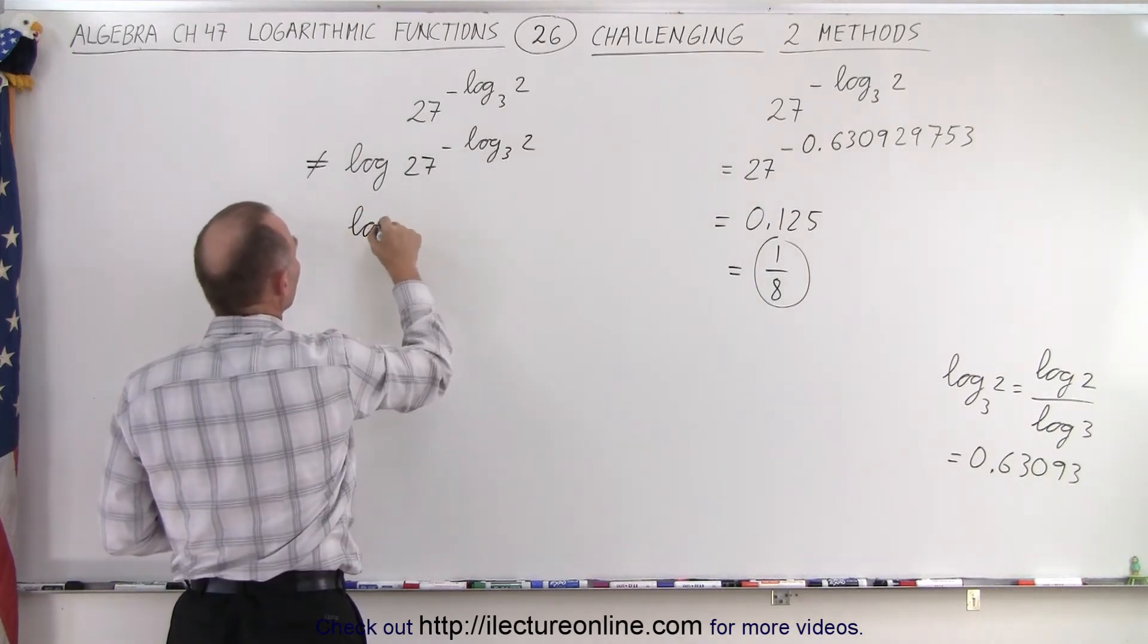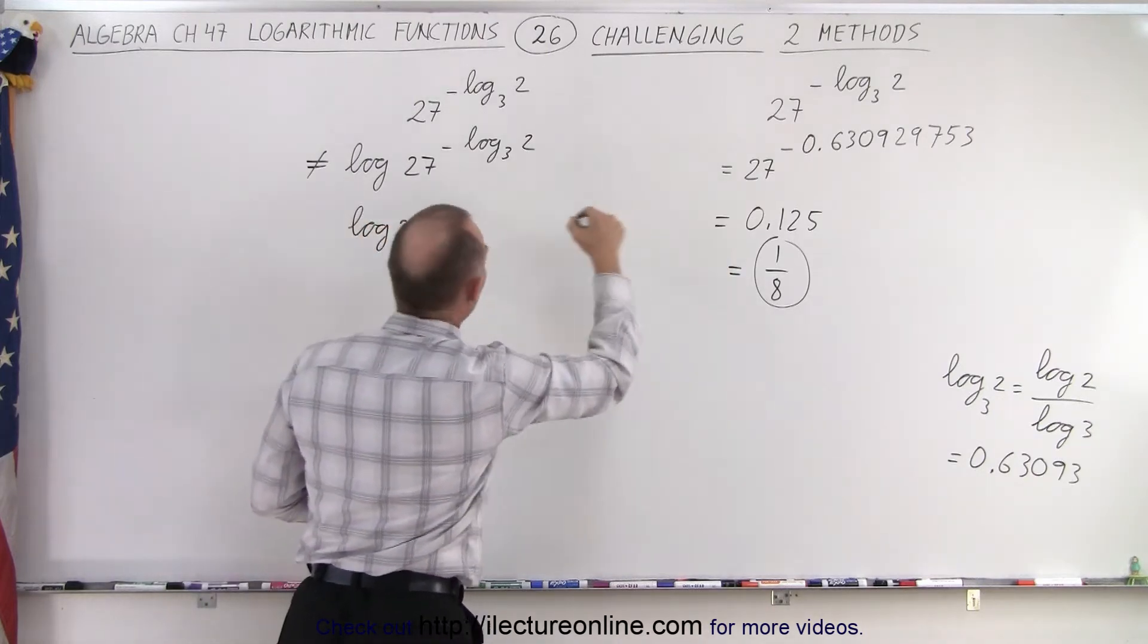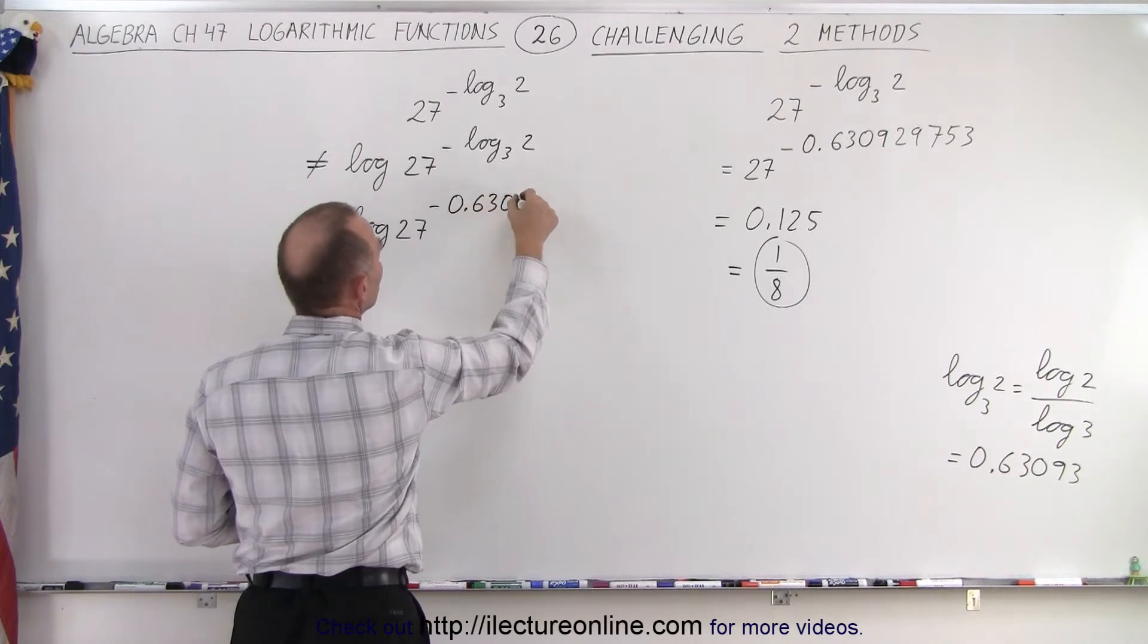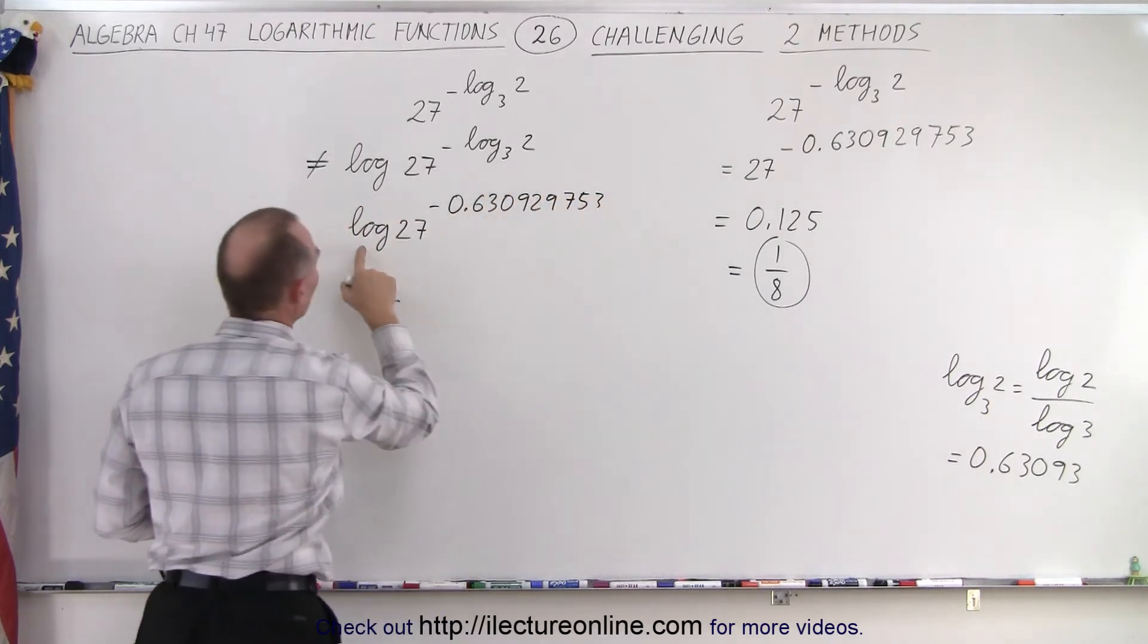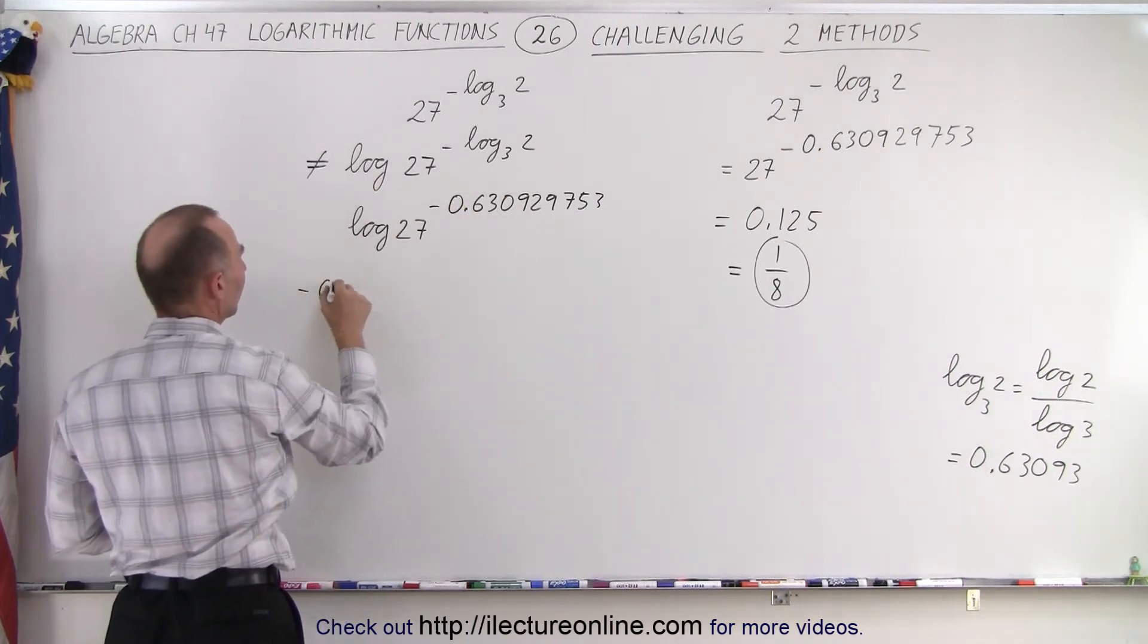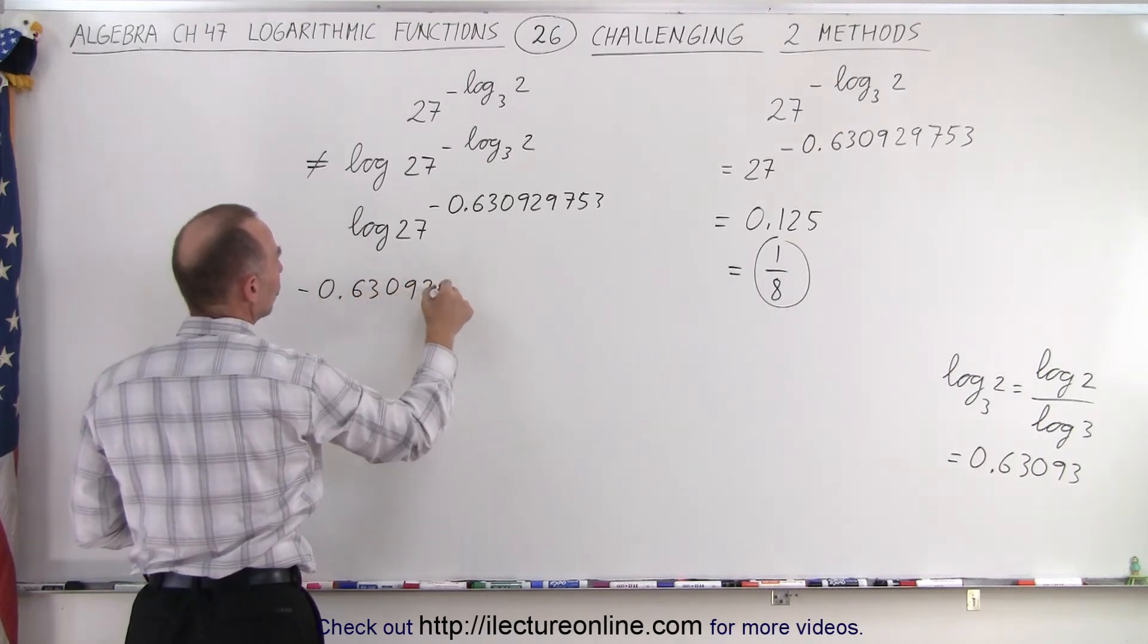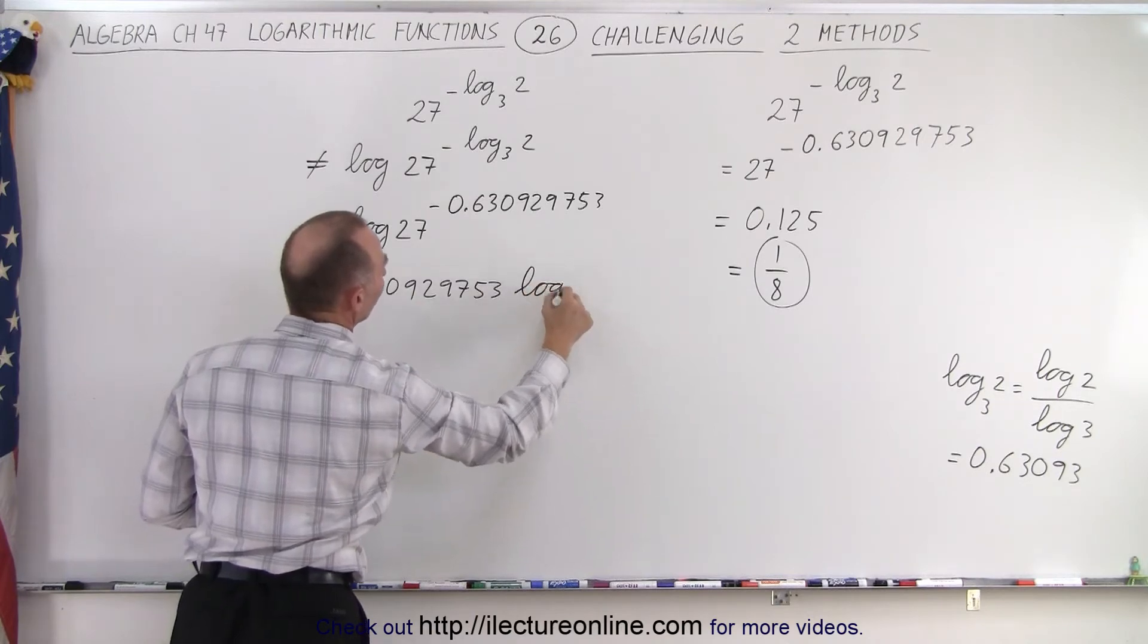So we say that this is the log of 27 raised to the minus 0.630929753. But now that we have it as a log, we can take this and put it in front. So this is minus 0.630929753 times the log of 27.